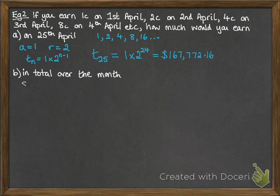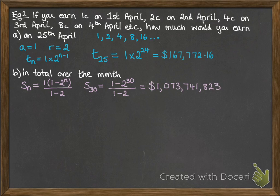Now our total over the month. So we want our sum formula. We've put in the a and the r value. We've got 30 days in April, so we're putting in n equals 30. And it looks like this. $1,073,741,823 earned in a month, just by starting on 1 cent on the first and 2 cents on the second. This is an example of how quickly these progressions can add up.